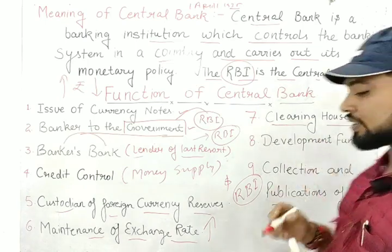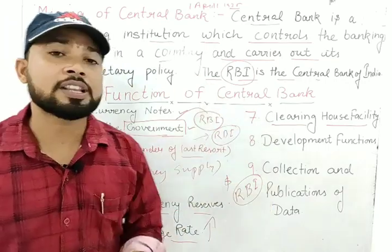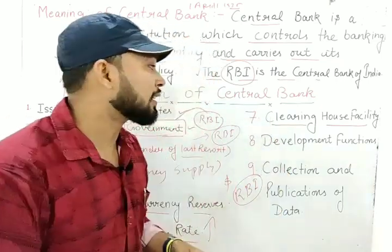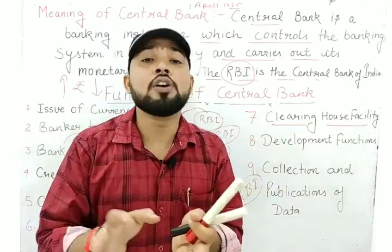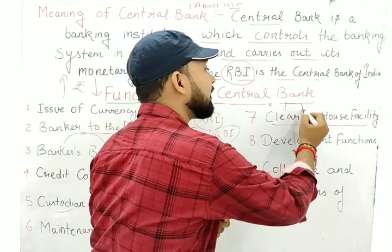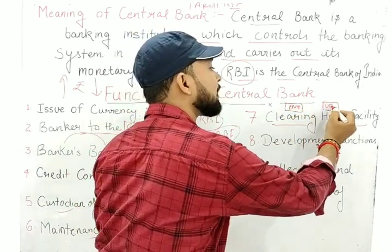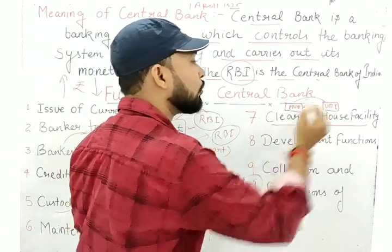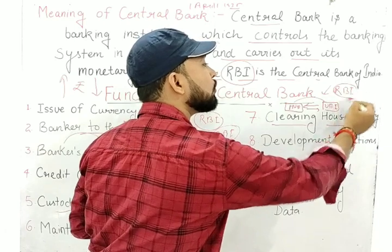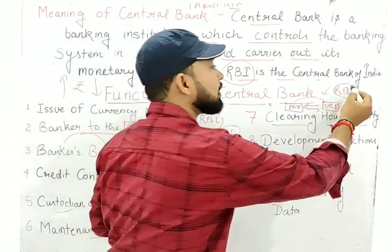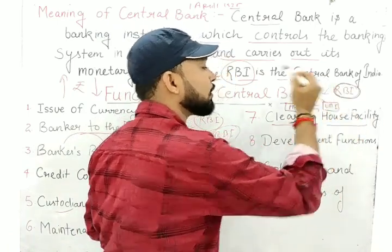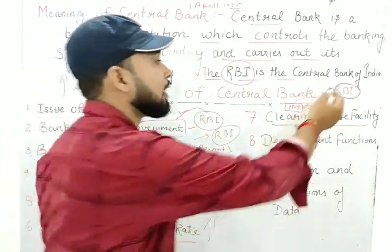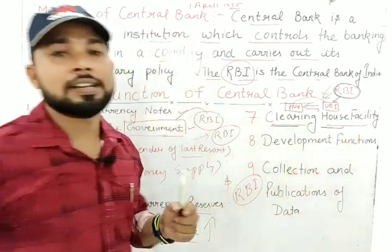The seventh function is clearing house facility. RBI is the guardian of all commercial banks. Clearing house facility means clearing all claims among commercial banks. For example, if there is a dispute between PNB and Union Bank of India regarding lending, RBI steps in to clear those conflicts. Just like a parent resolving disputes between children, RBI resolves disputes between commercial banks. This is known as the clearing house facility.